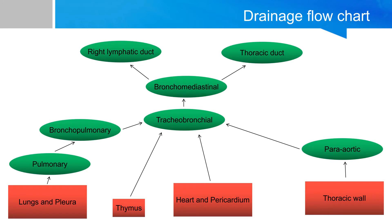First, here we have the lungs and the pleura on the left bottom of the chart. The lungs and pleura drain into the pulmonary lymph nodes, which are located around the hilum of the lungs. These pulmonary lymph nodes drain into the bronchopulmonary lymph nodes, and then they go up and drain to the tracheobronchial lymph nodes.